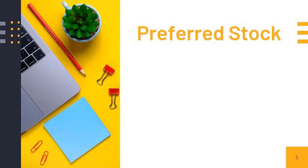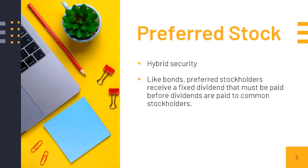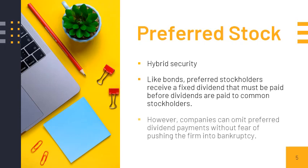Aside from common stock, we also have preferred stock. Preferred stocks are considered hybrid securities because they have characteristics of both bonds and stocks. Preferred stocks have fixed dividends, just like how bonds generally require fixed payments of interest and principal. However, unlike bonds, a company may choose not to pay dividends to preferred stockholders, provided that it does not pay dividends to common stockholders without paying preferred stockholders first.